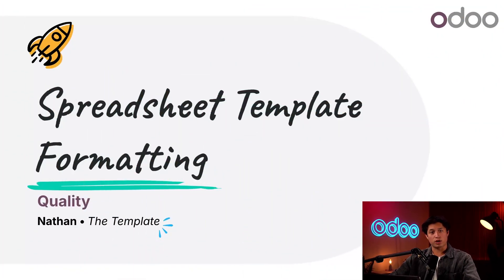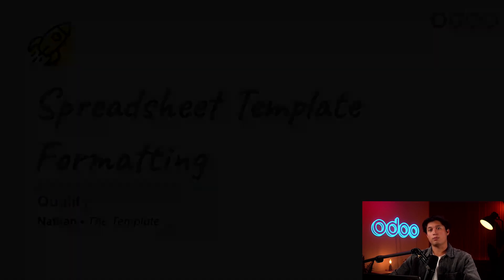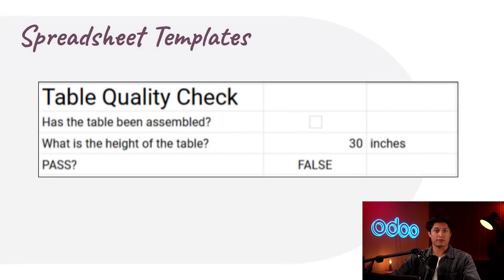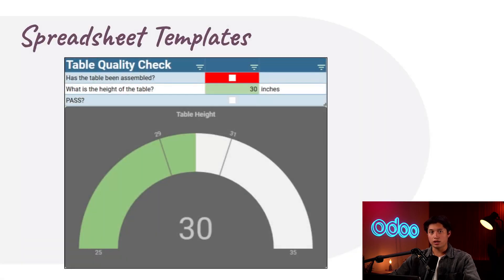What's up Odooers and welcome back. Today we're taking a deeper dive into spreadsheet checks, specifically how to spice up spreadsheet templates using the visual features available in Odoo's quality app. In our previous tutorial we saw how to create a spreadsheet template combining two quality check types: a pass-fail check type and a measure check. While this functionality is super powerful, we can make our spreadsheets even more engaging by adding visual indicators like color coding and even charts and graphs that update based off of the data we enter. Let's jump into our Odoo database now to see how it works.